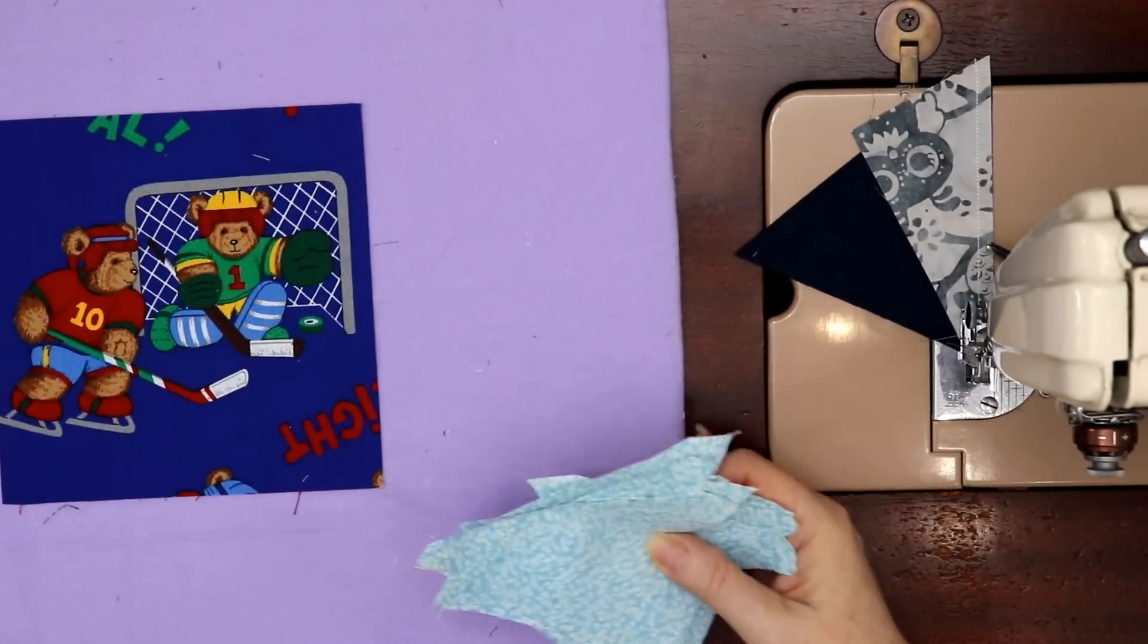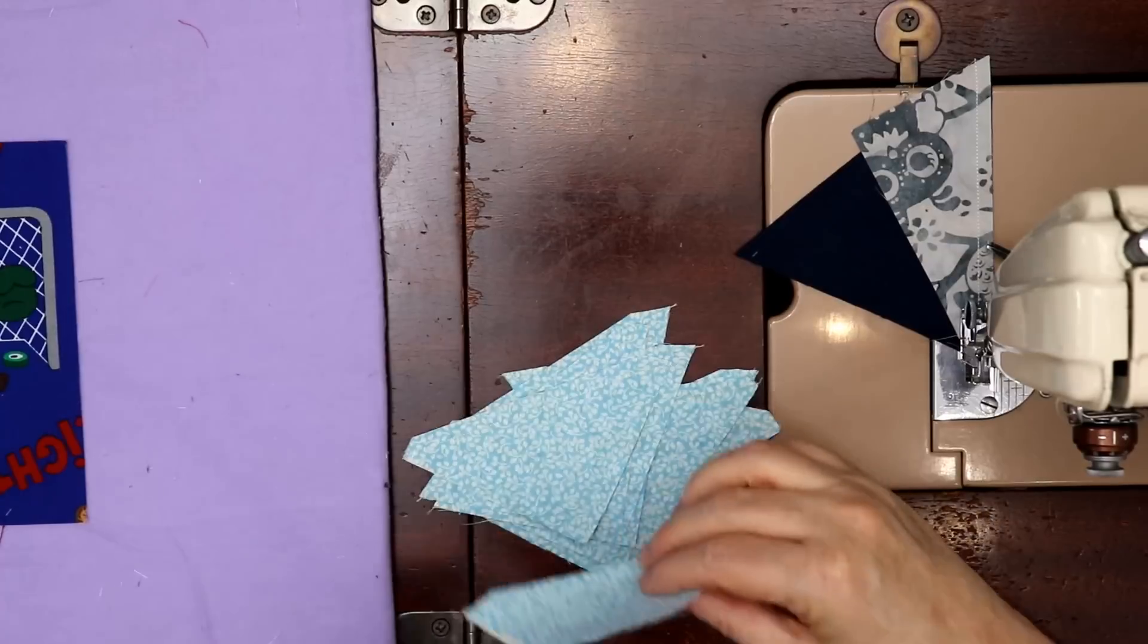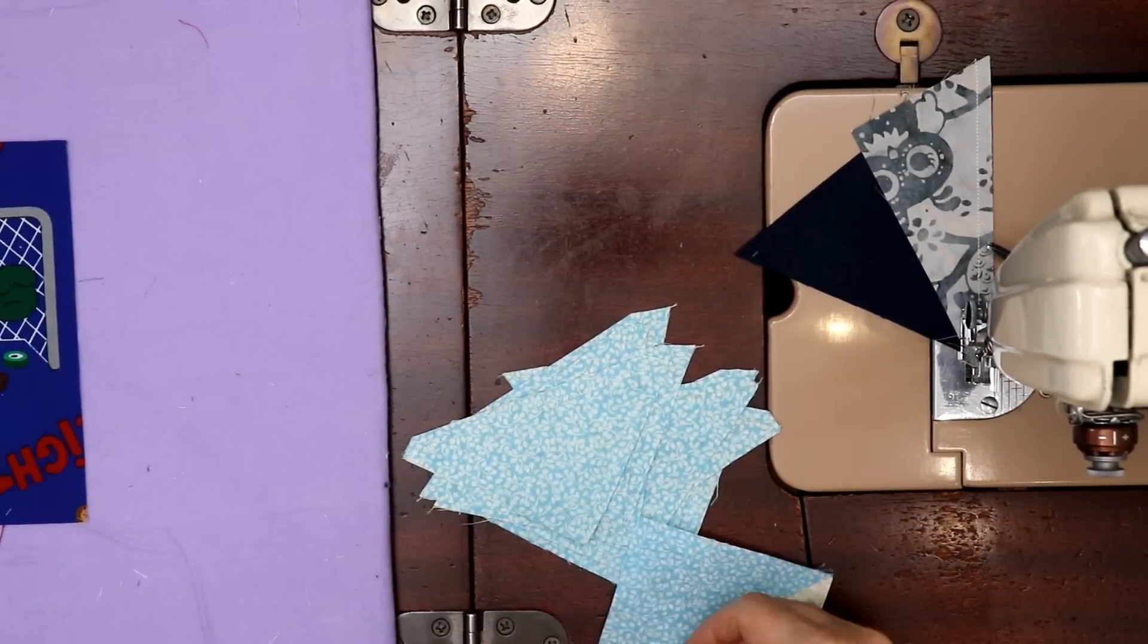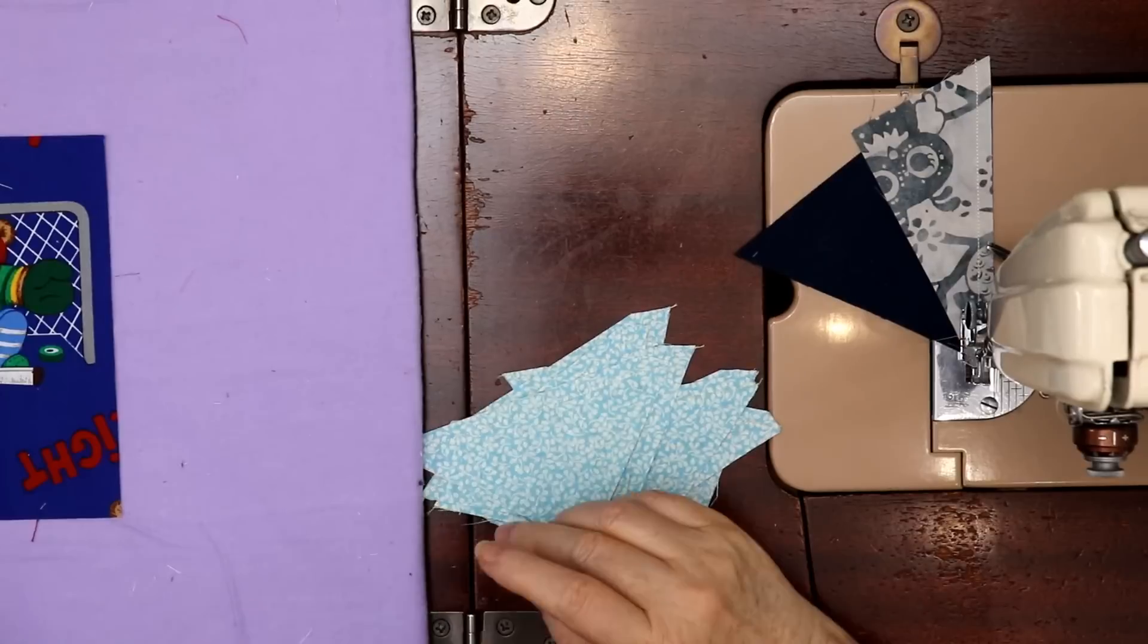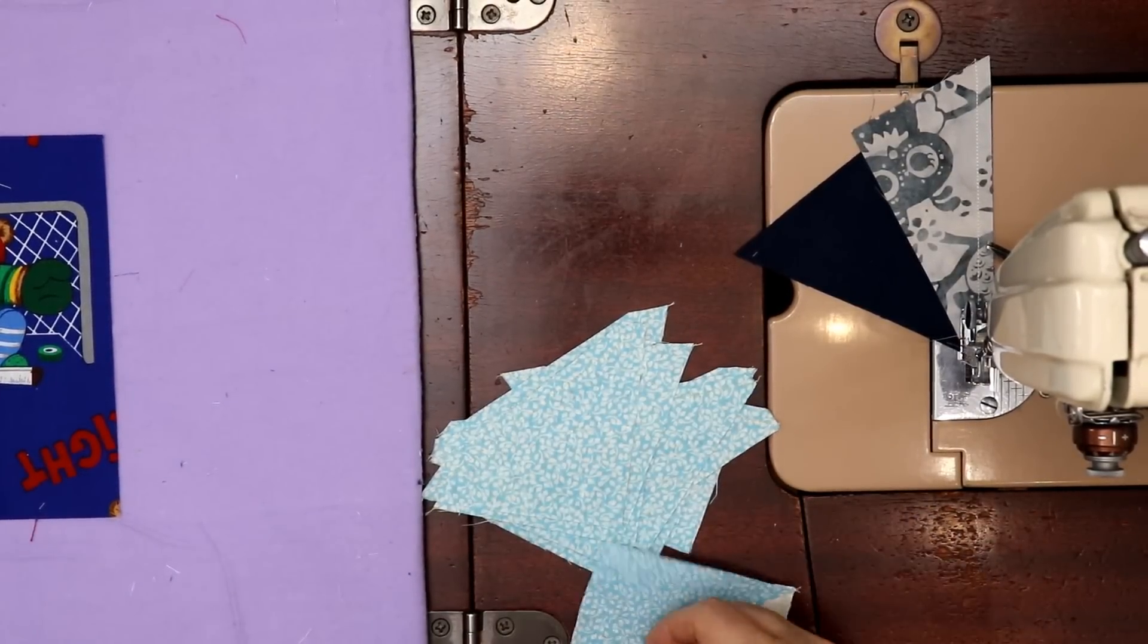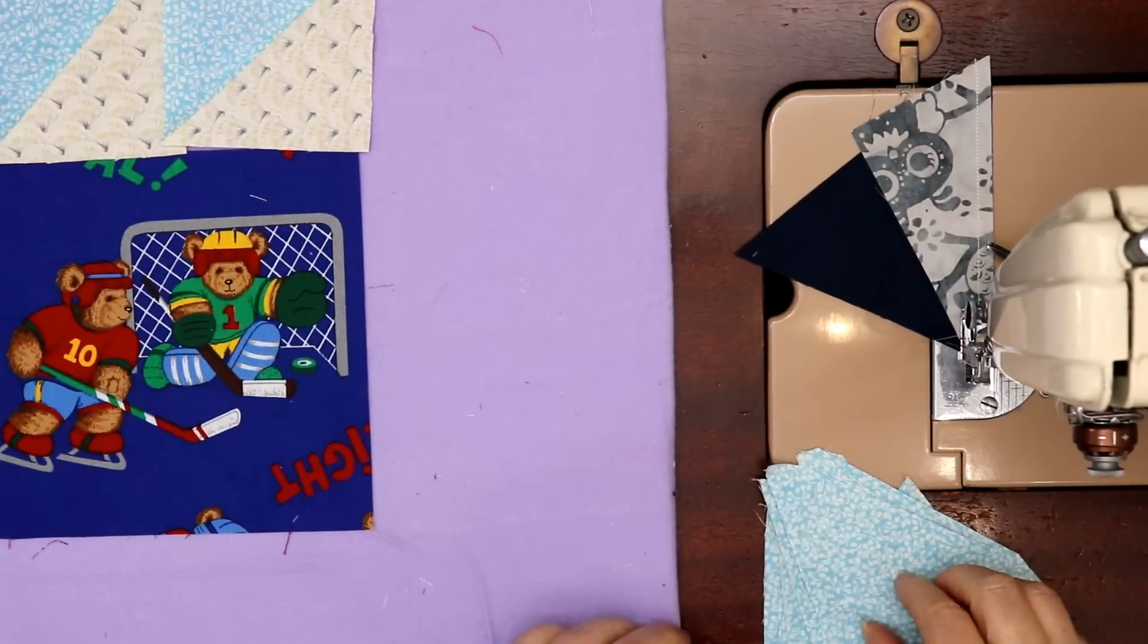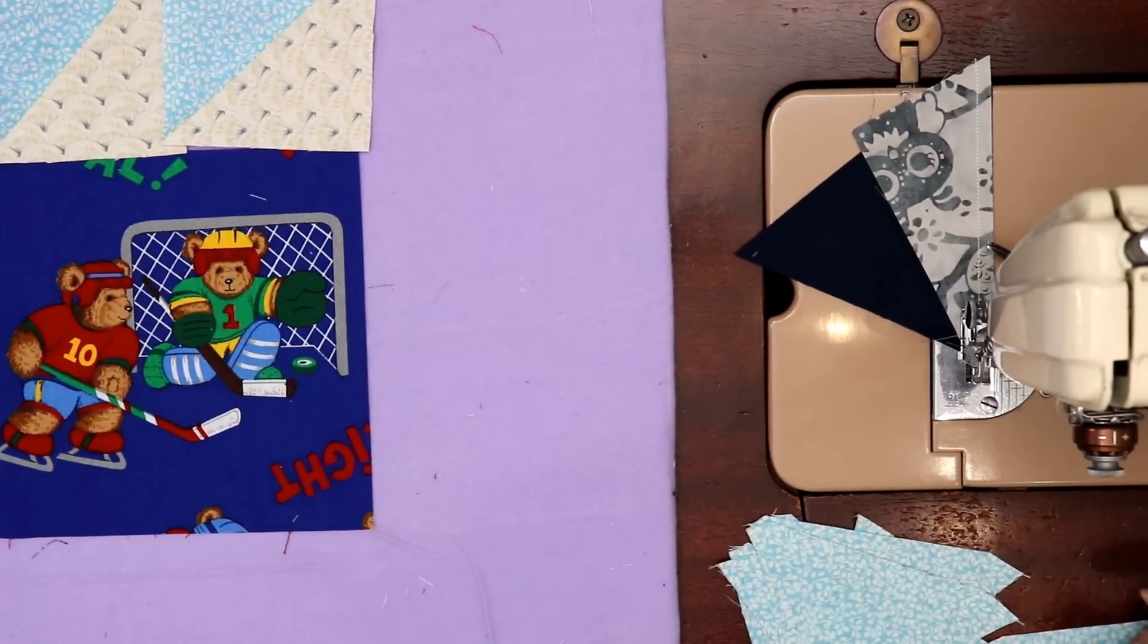They're all turned up white so you want to press to the dark. You want to turn these over and I'm just going to finger press them all open and put them around the block, all in the same direction.